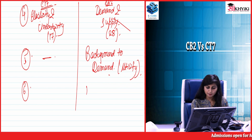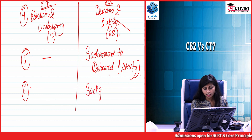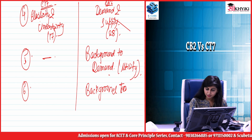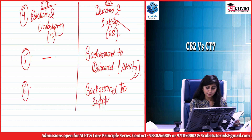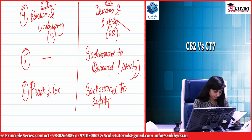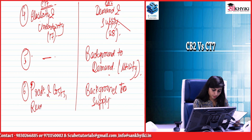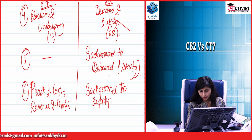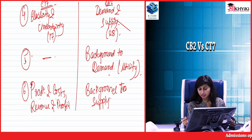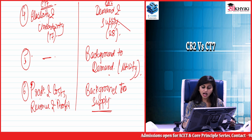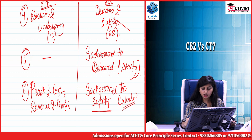The next chapter, Background to Supply, is only very briefly touched upon in CT7, whereas it is discussed in depth in CB2. Background to Supply replaces the chapters on production and costs, and revenue and profit. In CB2 you not only cover production, cost, revenue, and profit, but also the short-run and long-run dynamics using graphs and calculus to arrive at solutions.